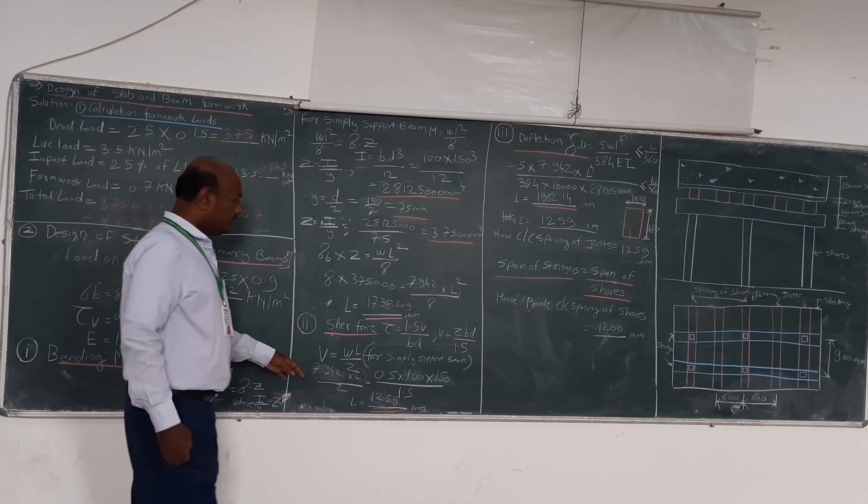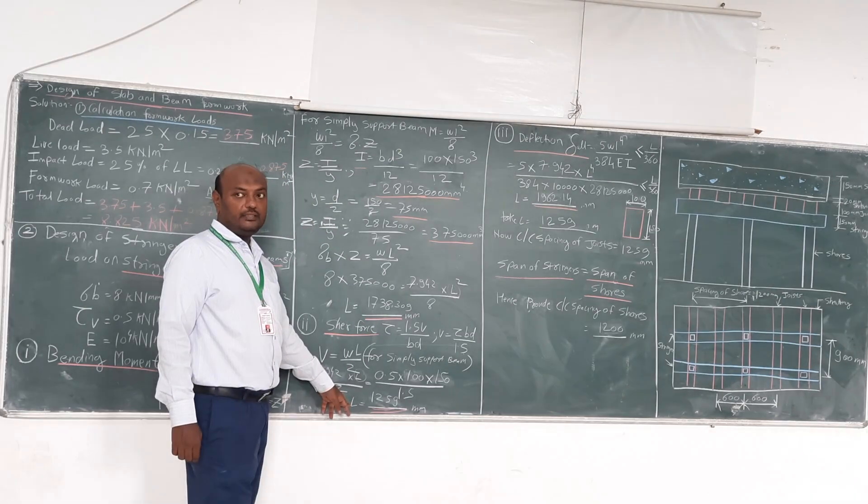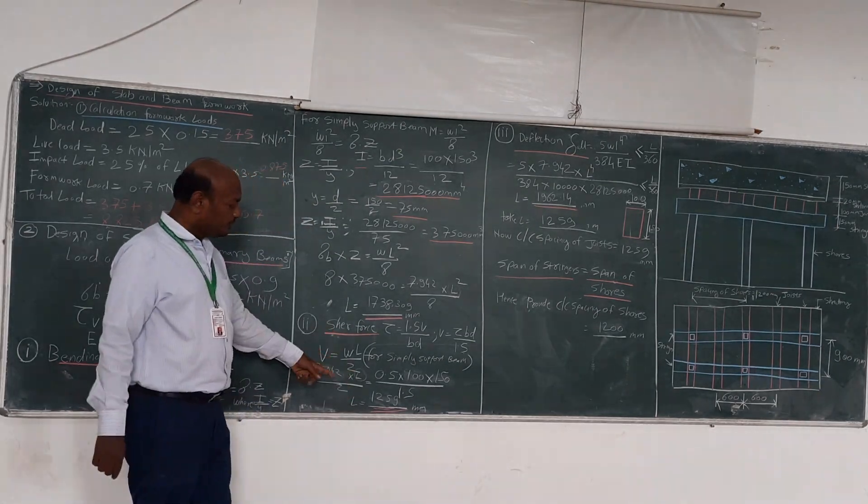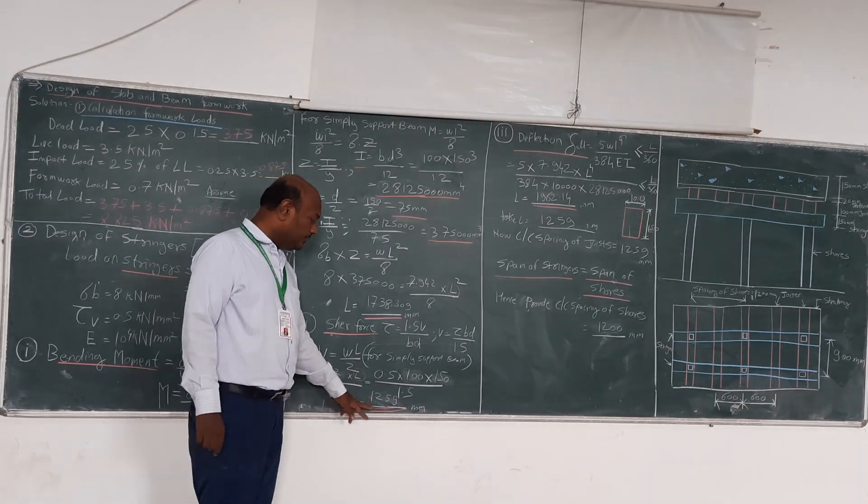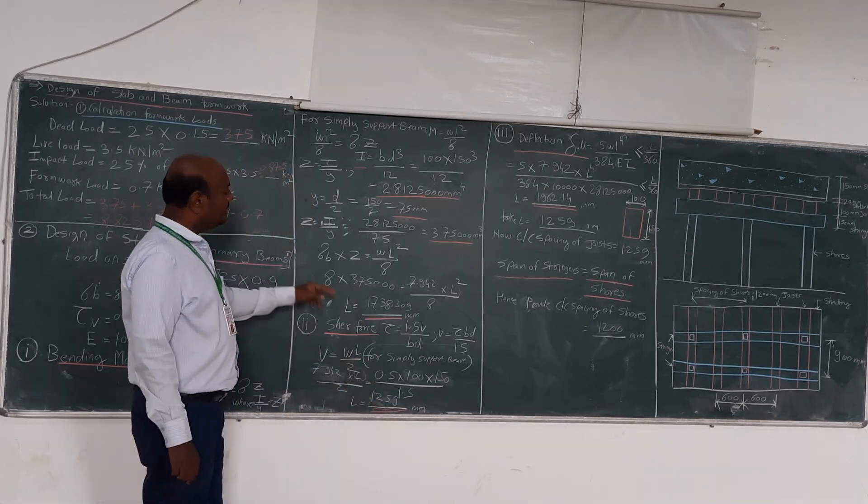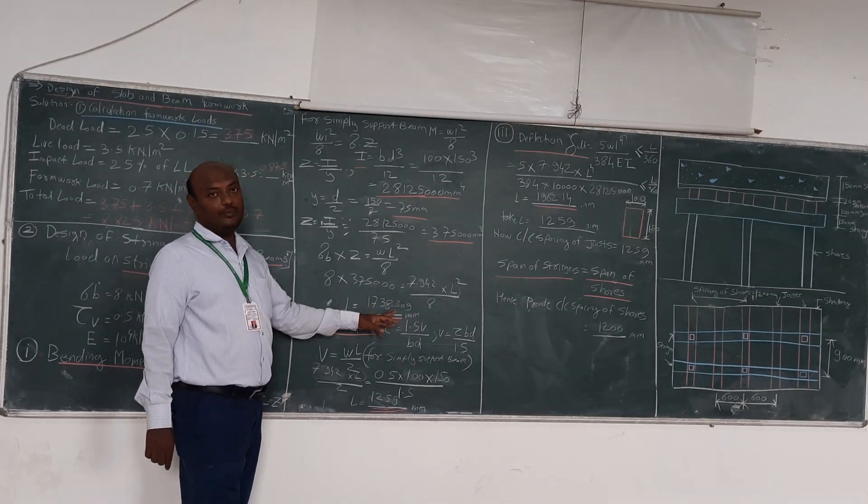Unknown is L. We will put all the values in this equation. In this equation we are looking at L. Here, L which we are getting by using the shear force formula is 1859 mm. And by using the bending moment formula, we got 2378.309 mm.